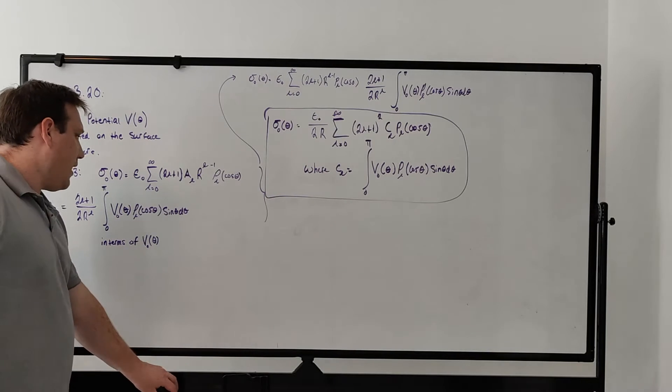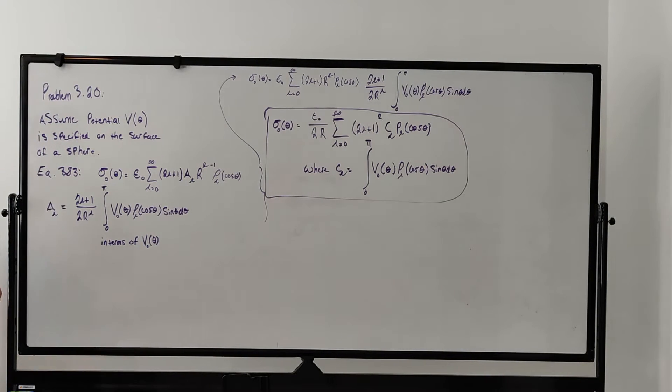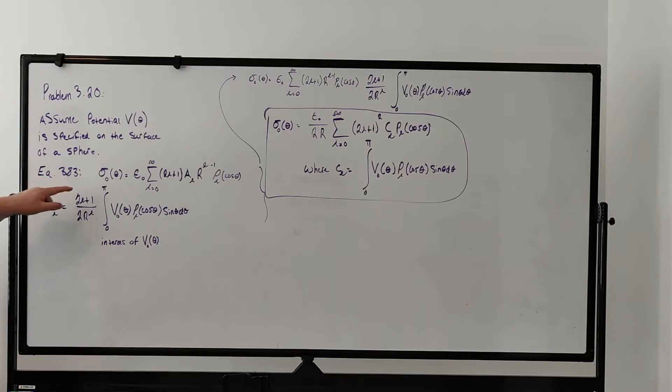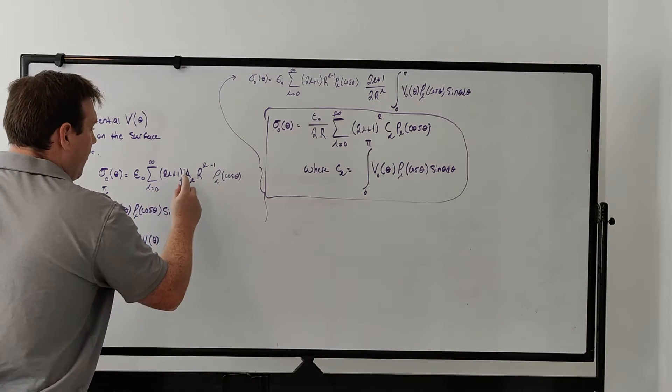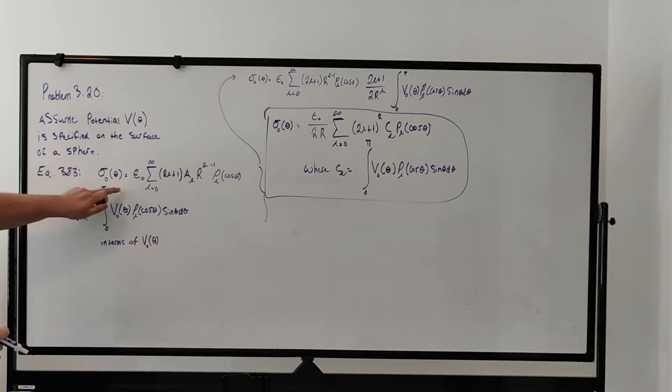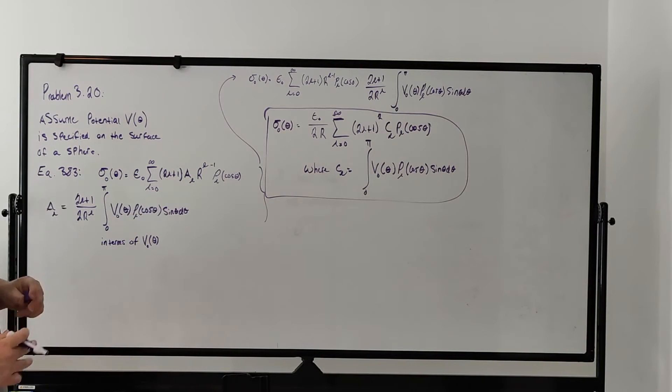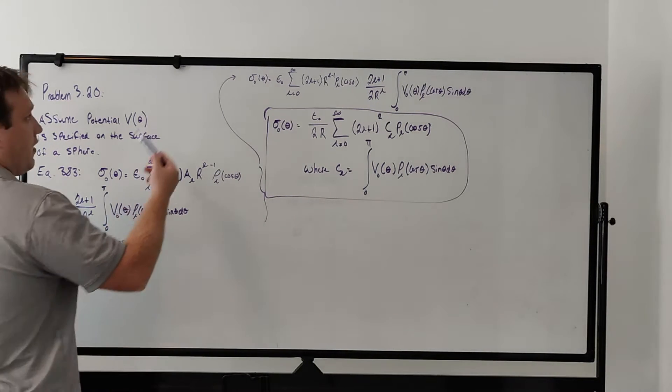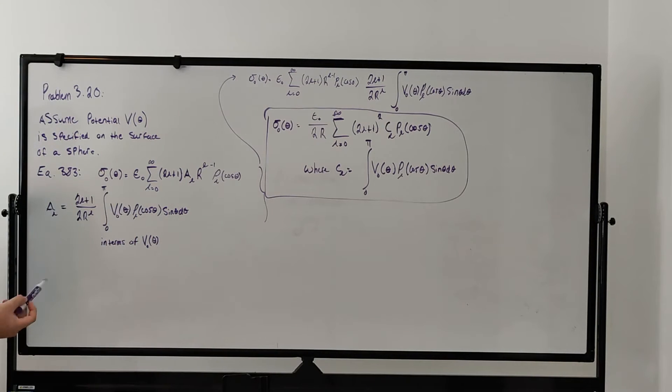Really all this comes down to is using some equations from the textbook. Equation 3.83 gives us the charge density as a function of A_L. This is an equation derived in chapter 3 by Griffiths. A_L has a couple different expressions found throughout chapter 3. One involves the charge density, and actually one of the first ones we derive involves the potential.